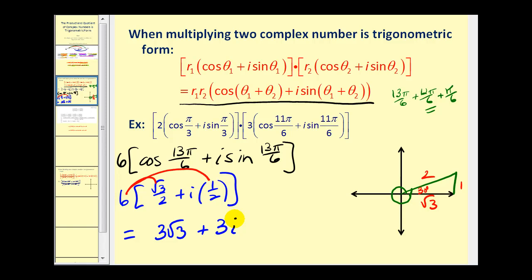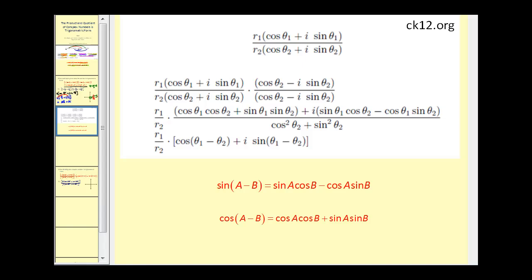Let's go ahead and take a look at the quotient of two complex numbers in trig form. We won't take the time to go over all of the steps here, but if we have a quotient of two complex numbers, the key to coming up with this formula is to take the numerator and denominator and multiply it by the conjugate of the denominator. So we multiply both the numerator and the denominator by cosine θ₂ minus i sine θ₂.